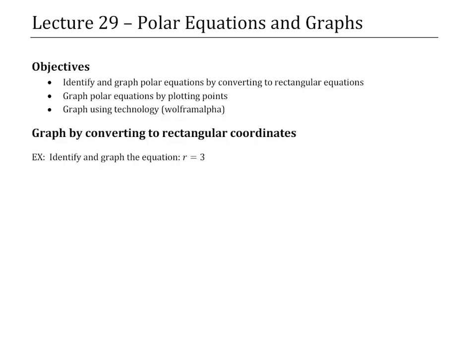Let's start with the simple case of converting polar equations into rectangular equations. In this first example, r is equal to 3. There are a couple of ways to handle graphing this. The first is the intuitive idea of what r means: r is the distance from the origin. So what is the set of all points whose distance from the origin is 3? The answer is a circle — going out 3 in each direction. That is the intuitive approach, and certainly very few polar equations are as simple as that.